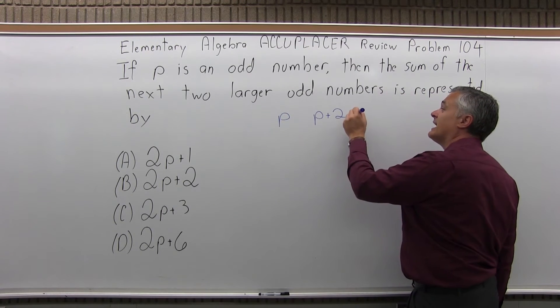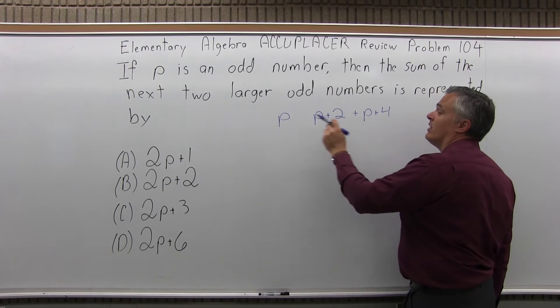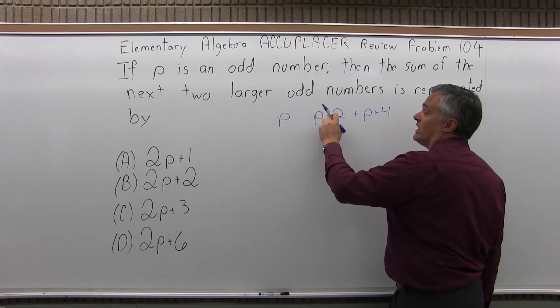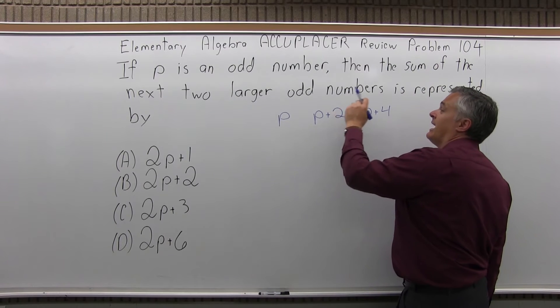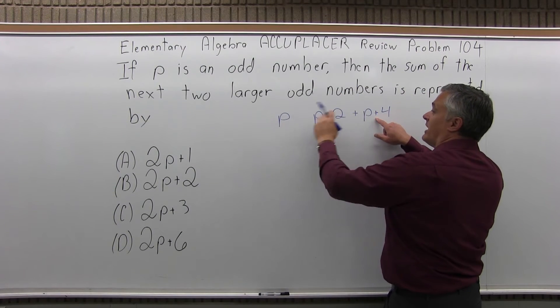Then the next one after that would be P plus four. Or, whatever P is, if you add two to it, it gets the next odd. And then four to the original value of P, it gets the next odd after that.